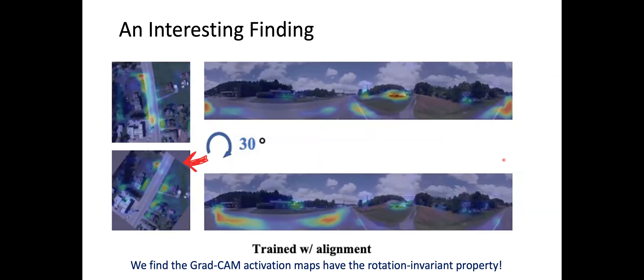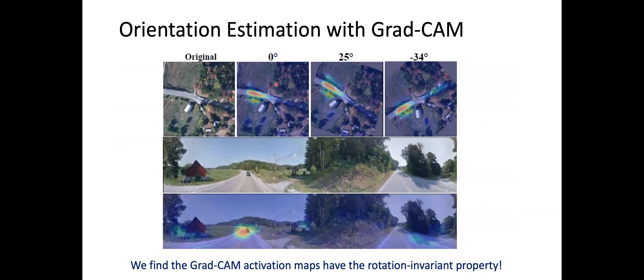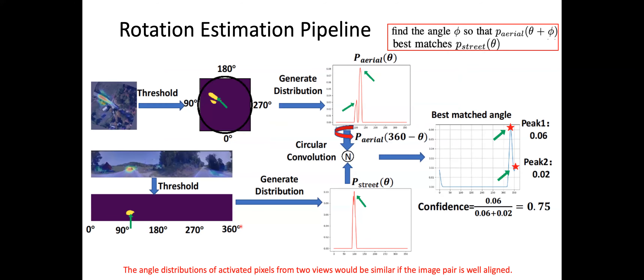By doing these visual explanations, we have an interesting finding: if we rotate the aerial view image to a certain degree — for example, 30 degrees — the gradient CAM activation map does not change much. The activation still highlights the road region. In another example, rotating the aerial image to 25 or minus 34 degrees, the activation map on the street view image does not change much. This means gradient CAM has a rotation-invariant property, and we can use this property to perform rotation estimation.